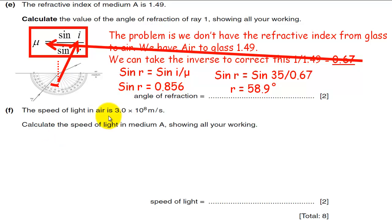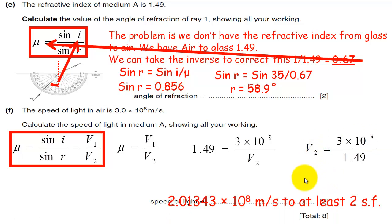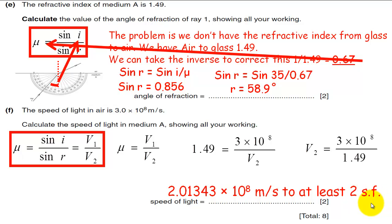Next part says the speed of light in air is 3 times 10 to the 8 meters per second. Calculate the speed of light in medium A showing all your working. You can use the whole Snell's law for this one. We don't really need sine I and sine R. It doesn't matter which way around you do this. You could use 0.67 and make V1 the unknown, or you could do it using the original 1.49, which would be assuming you're going from air into medium A. The velocity in air would be 3 times 10 to the 8. We just need to rearrange this for V2. You can multiply both sides by V2, cancel, and then divide both sides by 1.49. Calculating this on your calculator gets you a number something like this. The mark scheme did ask for at least two significant figures there.